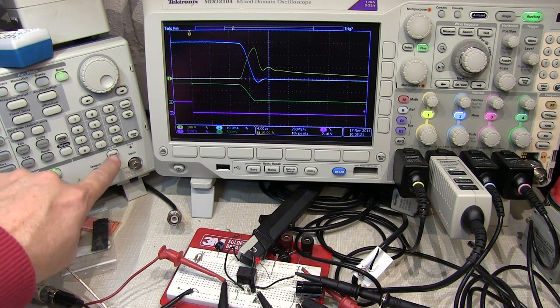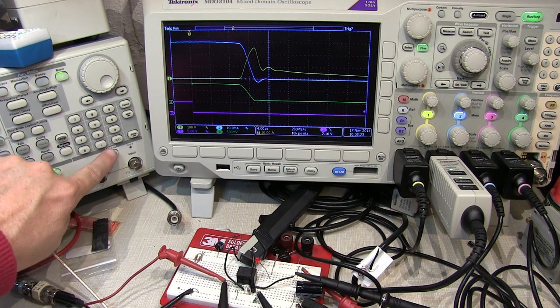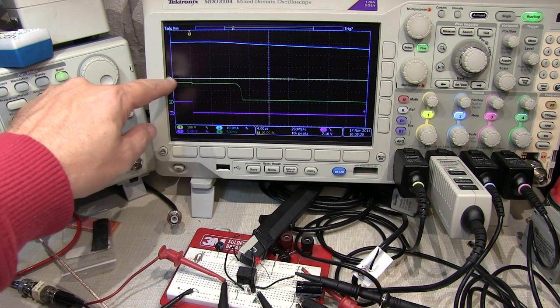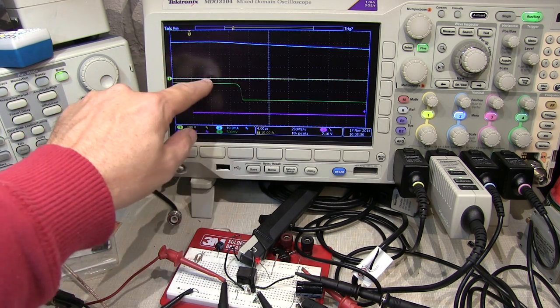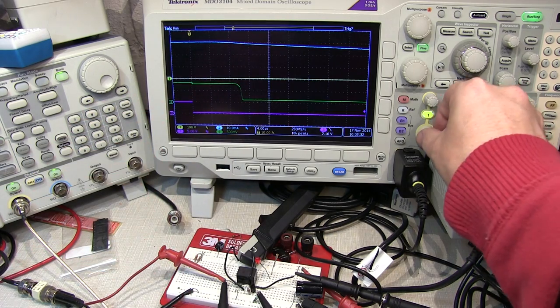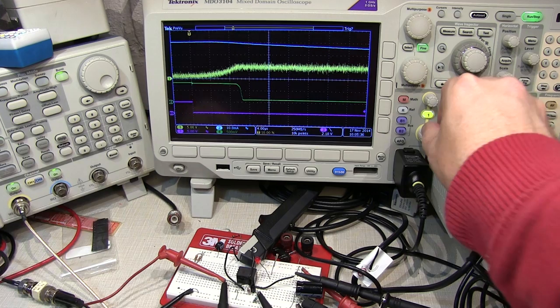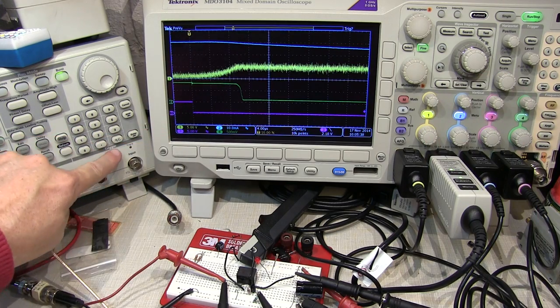Now let's put the protection diode in from the collector to the 5 volt supply. So now if I trigger the scope again, take a look at the waveform. Well, a lot of different things going on here. But first off, we don't see that huge voltage spike on the collector anymore. So let's reduce the scale down on channel 1 to 5 volts of division and collect this waveform again.